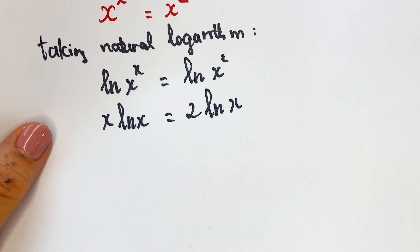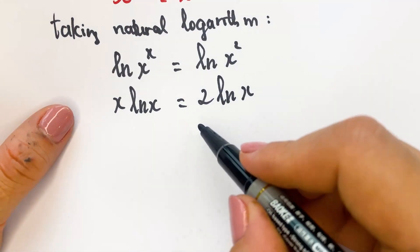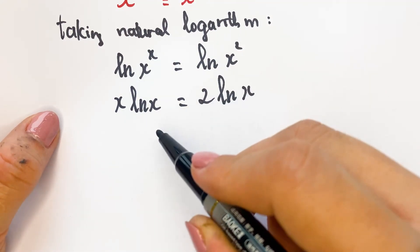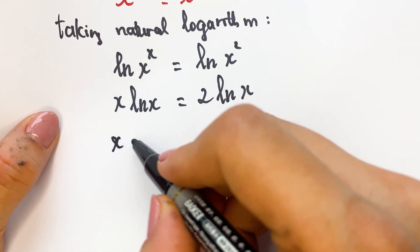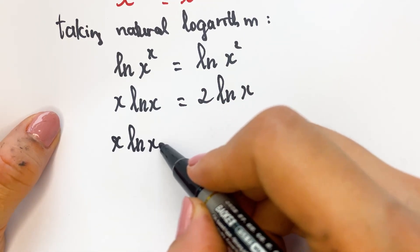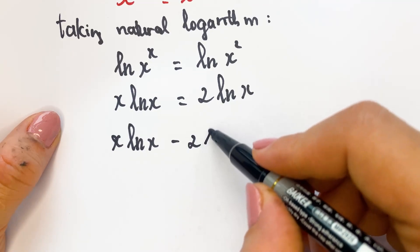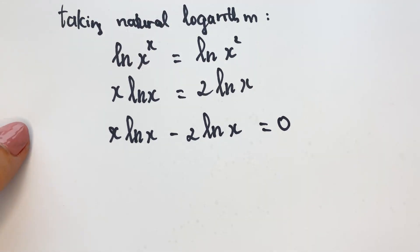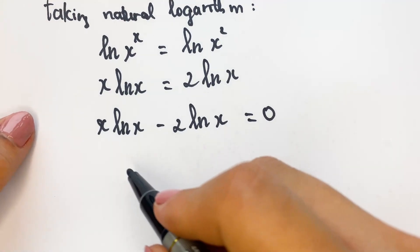And then for next, you need to move the factor on the right hand side to the left hand side: x ln x minus 2 ln x equals zero.